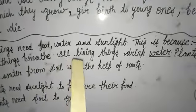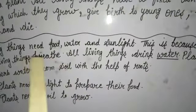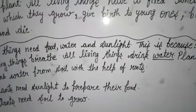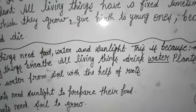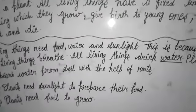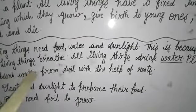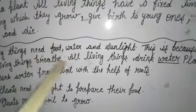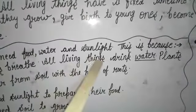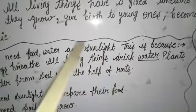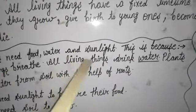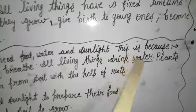At last — living things need food, water, and sunlight. जो living things होती हैं, उन्हें खाने की, पानी की, सूरज की रोशनी की जरूरत होती है. इन चीज़ों की जरूरत क्यों होती है? Because living things breathe — air की जरूरत इसलिए होगी क्योंकि वो सांस लेते हैं, अगर air नहीं होगी तो वो सांस नहीं ले पाएंगे. All living things drink water — उन्हें खाने और पानी की जरूरत होती है.